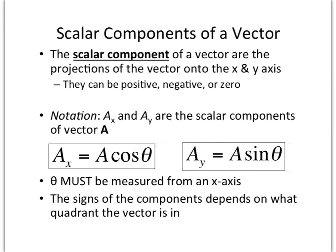In this section we're going to talk about what we can do with a vector — that is, we can break a vector into x and y scalar components. We know that a vector has some sort of magnitude and direction. For example, vector A might be 3 meters at 20 degrees north of east. It's got a magnitude and a direction, but that direction is kind of arbitrary.